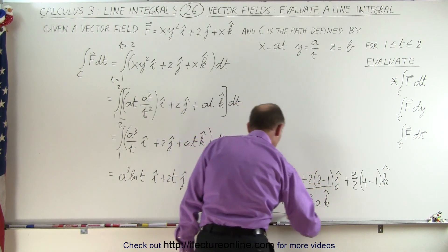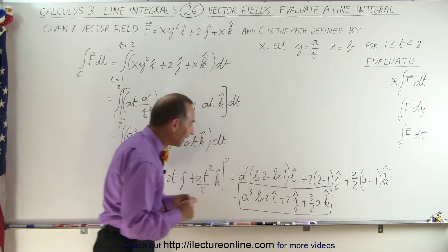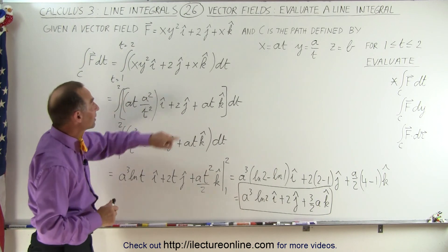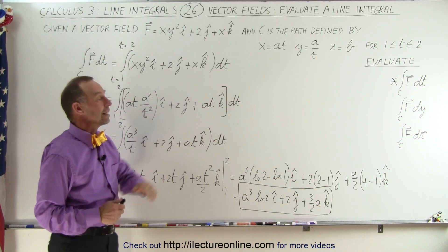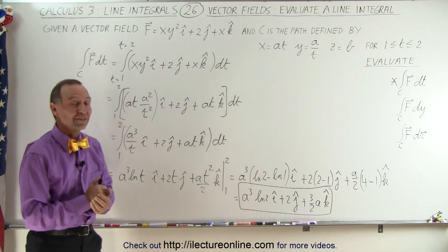And here we get 3. That would be plus 3 over 2a in the k direction. And this here, then, is the evaluation of our line integral when we have a dt there rather than a dr. And that's how that's done.